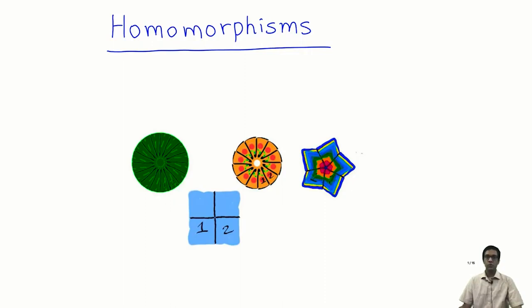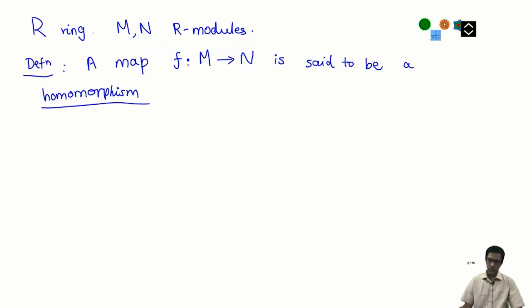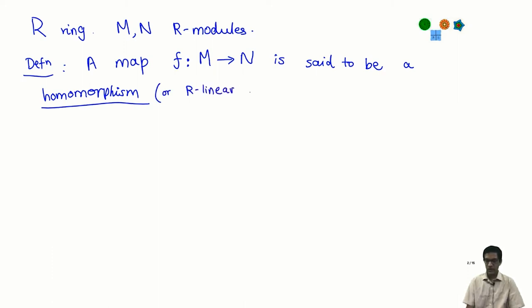Let us talk about homomorphisms of modules. Suppose R is a ring and M and N are two R-modules — they need to be modules over the same ring R. Then a map, a function from M to N, is said to be a homomorphism. We sometimes call it an R-linear map or, if we want to emphasize the ring R, an R-homomorphism.